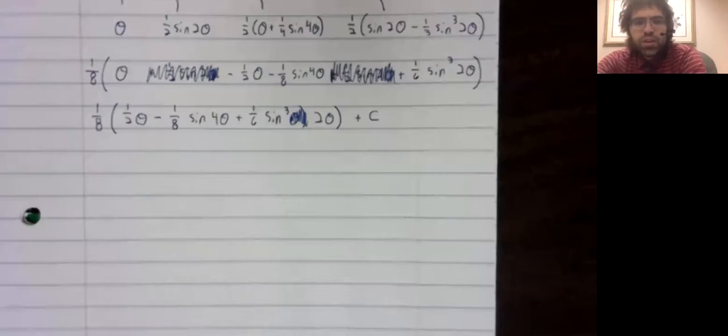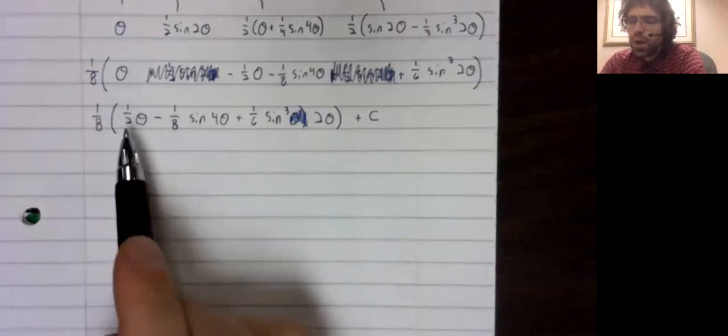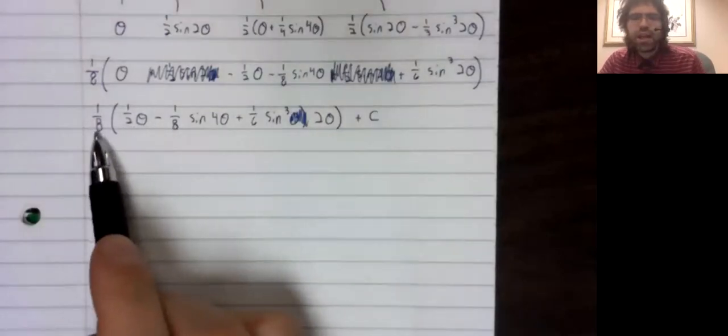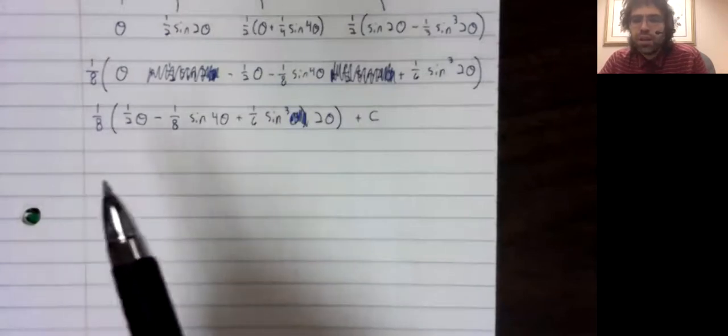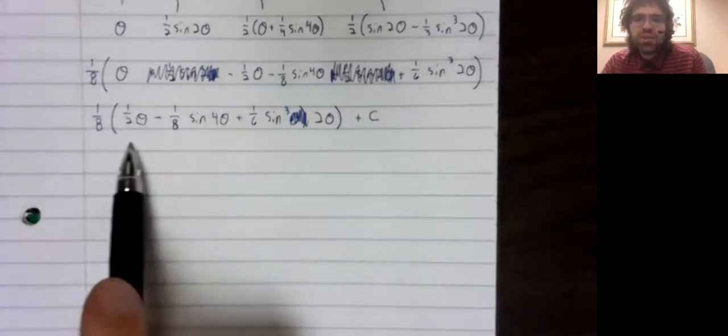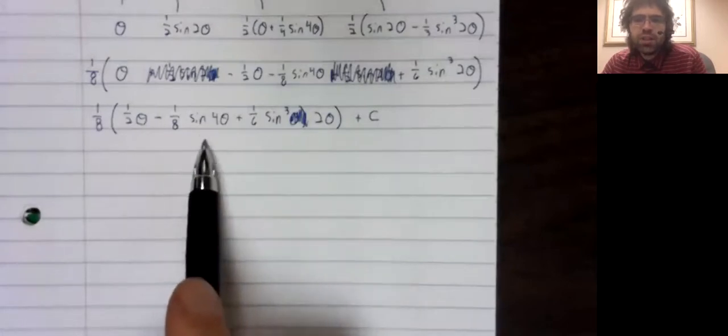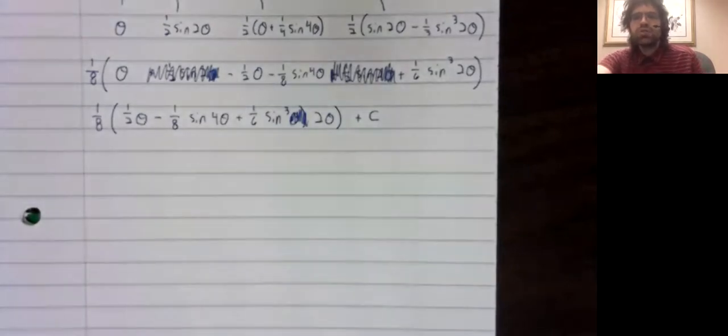In the notes, it's written a little bit differently. We pull out the one half. So we have a one sixteenth in front. But this is the same solution you see in the notes, just written a little more differently.